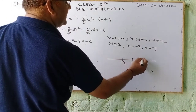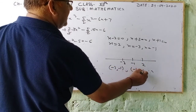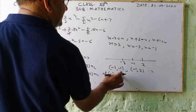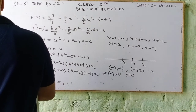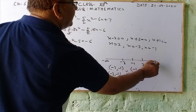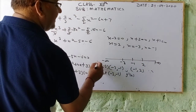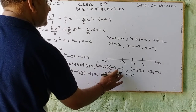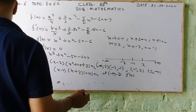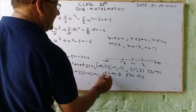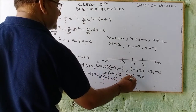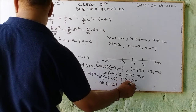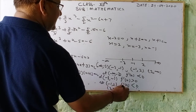The intervals are: minus infinity to -3, -3 to -1, -1 to 2, and 2 to infinity. Checking signs: on (-∞, -3), f'(x) is less than 0 (decreasing); on (-3, -1), f'(x) is greater than 0 (increasing); on (-1, 2), f'(x) is less than 0 (decreasing); on (2, ∞), f'(x) is greater than 0 (increasing).